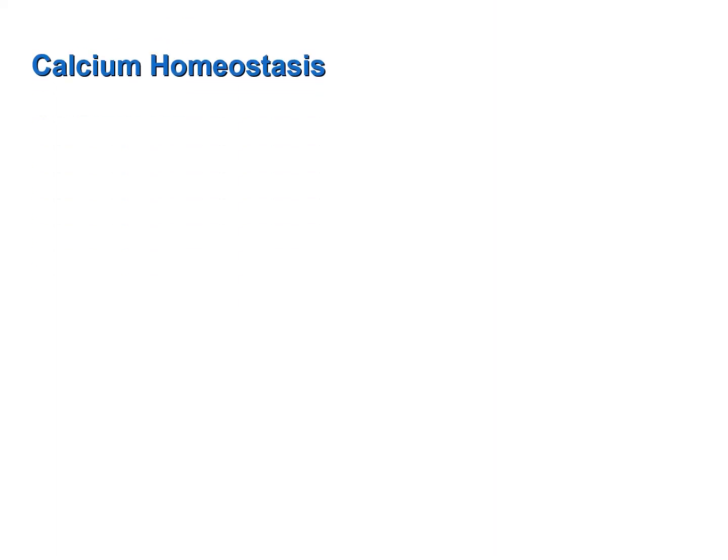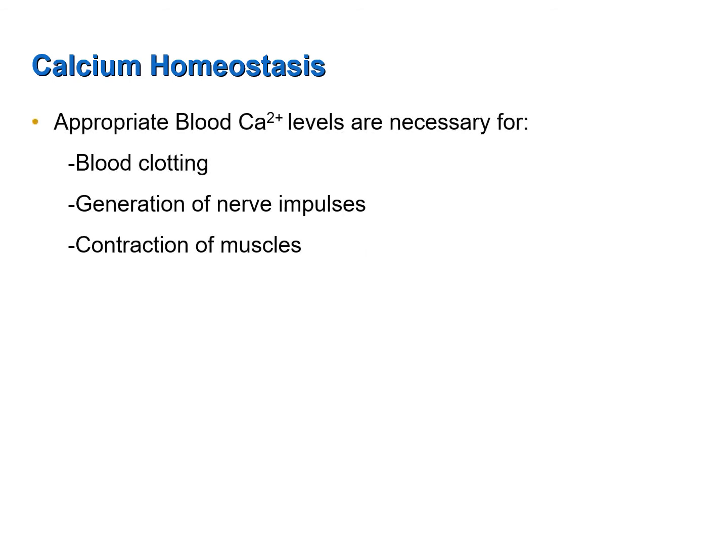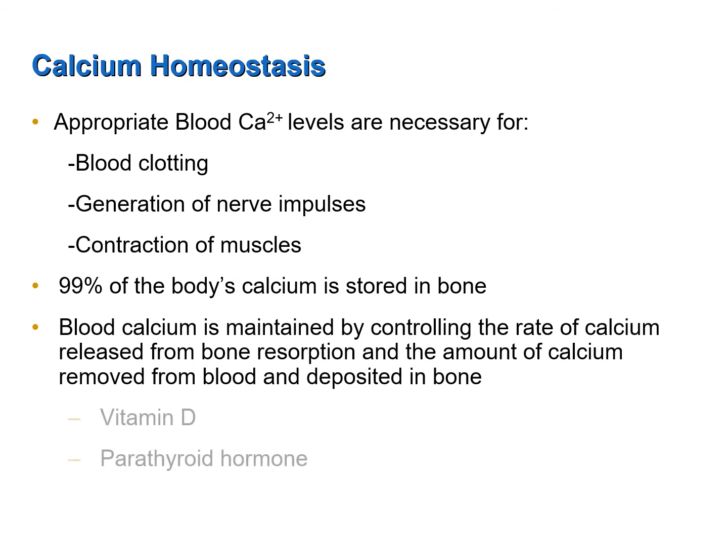Calcium homeostasis refers to maintaining the calcium levels of blood within the normal range. It is very important because calcium is involved in blood clotting, the generation of nerve impulses by neurons, and the contraction of muscles, including the cardiac muscles of the heart. Ninety-nine percent of the body's calcium is stored in bone, so the skeletal system serves as a calcium bank. Blood calcium is maintained by controlling the rate of calcium released from bone as it is resorbed by the osteoclasts.